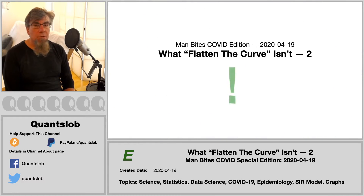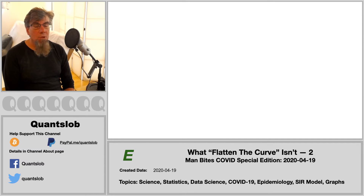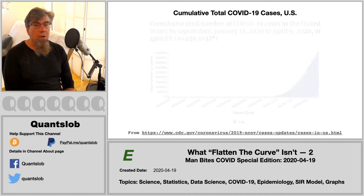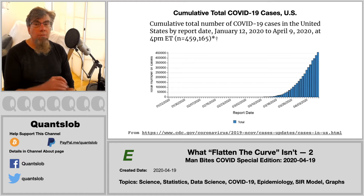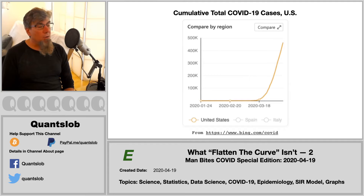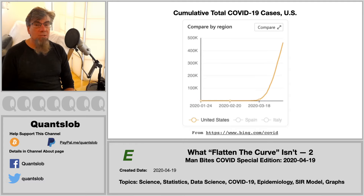Our first edition in this series was motivated by the fact that many people, it seems, are misinterpreting some of the COVID graphs commonly found online and in media. These cumulative plots are not intended to convey the curve referred to in the phrase 'flatten the curve.' These are great resources, no question, but we always want to interpret them correctly lest we be misled. If you want the details, I encourage you to watch the earlier Manbytes COVID installment.